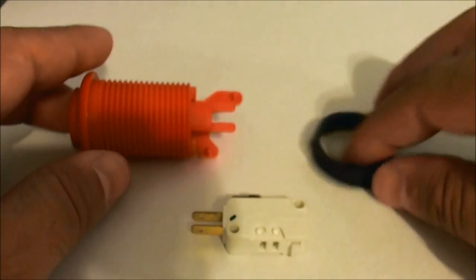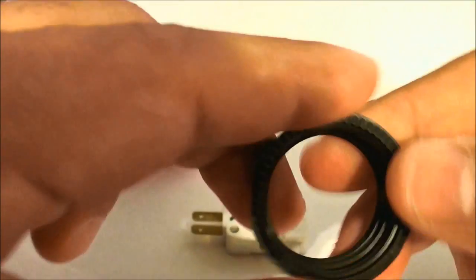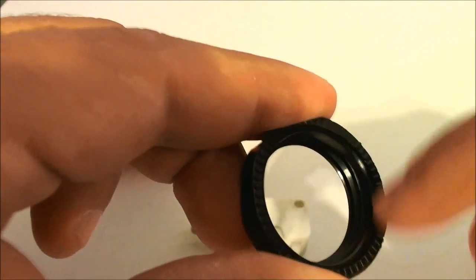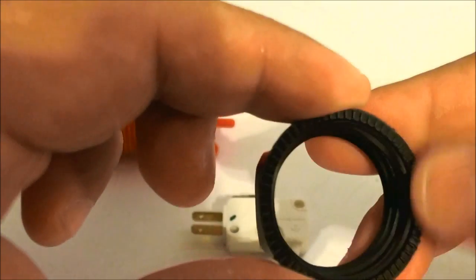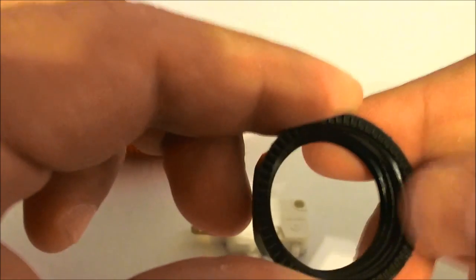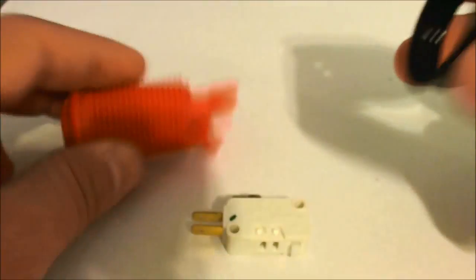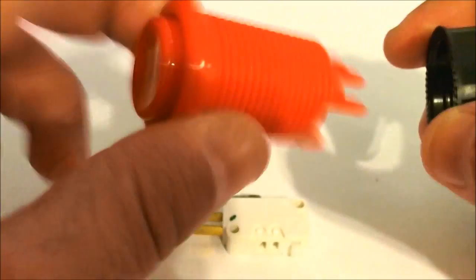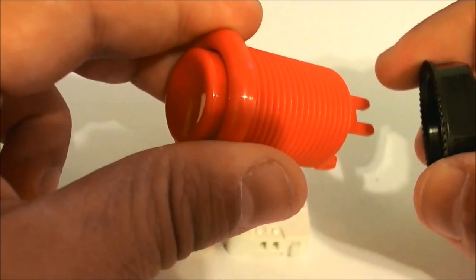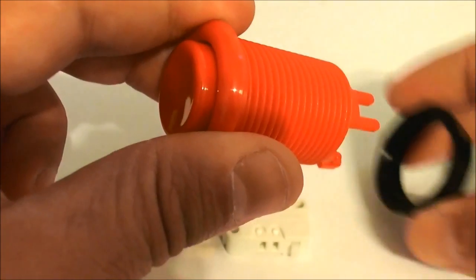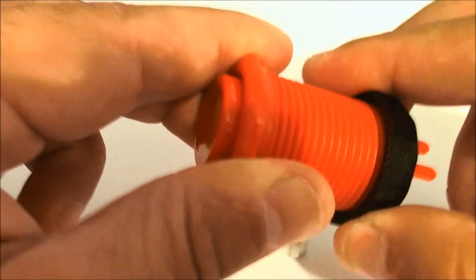The next part would be the actual ring. The ring has some grooves on it so that it would be harder for it to unscrew during normal usage. And that just goes over this. So this would go into a hole on the control panel and this would be underneath it to basically hold it in place.